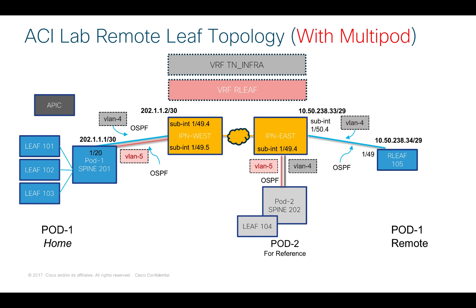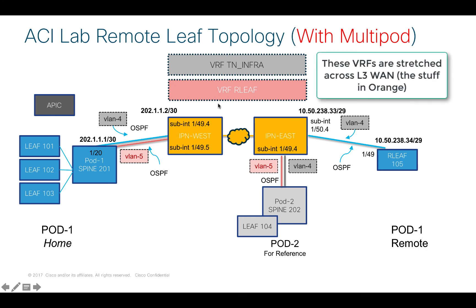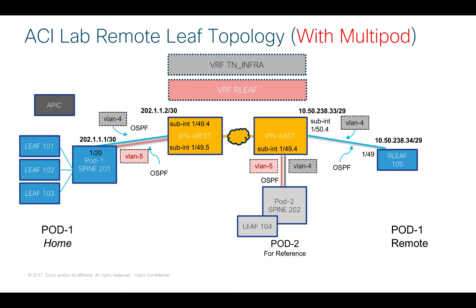In the second example, with a multi-pod setup, I've got pod 1, IPN devices in the middle, and pod 2. I still want to extend remote leaf 105 as part of pod 1, but with full connectivity for any endpoint in any pod — remote or at home. I'm going to create two layer 3 outs for each pod: the existing VLAN 4 layer 3 out, and a second layer 3 out using VLAN 5, for both pod 1 and pod 2 and any other connected pods. Note the colors: VLAN 4 belongs to a VRF established across my layer 3 devices, and VLAN 5 is in a different VRF named 'rleaf'. I will explain why we need these different VRFs in the multi-pod deployment video.